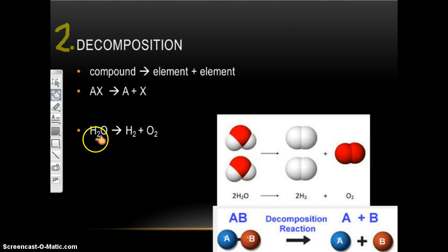So AX yields A plus X. Or any compound breaks apart into one element and another element. So now I start with water, H2O, it yields H2 plus O2. Again, it doesn't matter that there's two of them because it's one element plus one element, and we started with a compound. So here's John Moore's bubbles. So H2O.